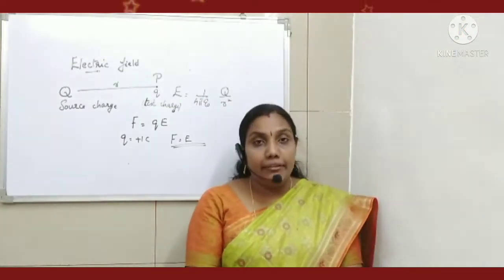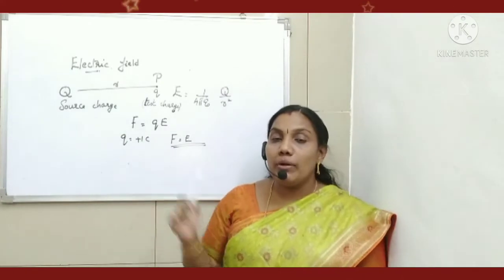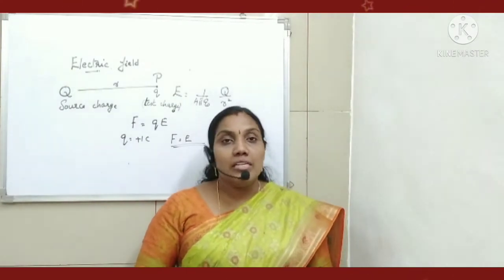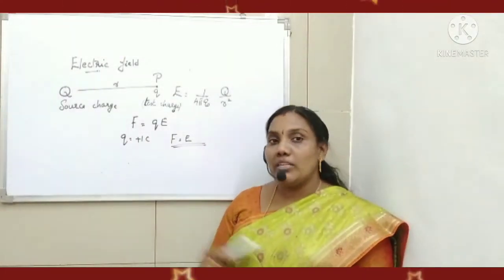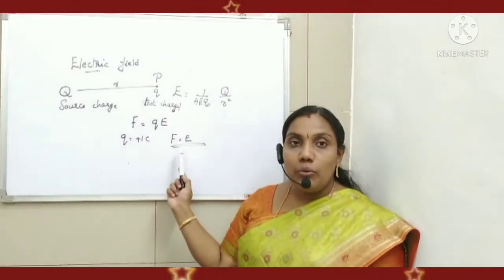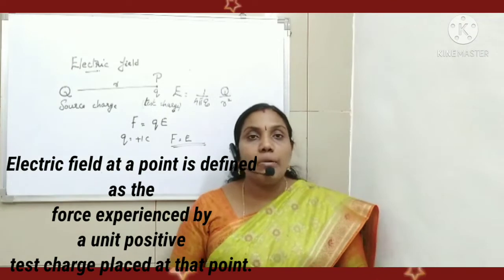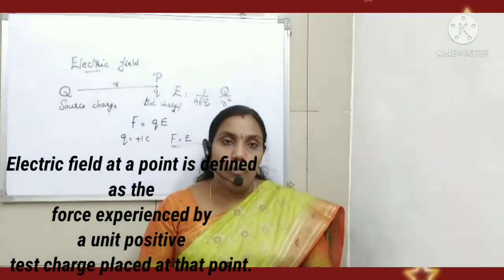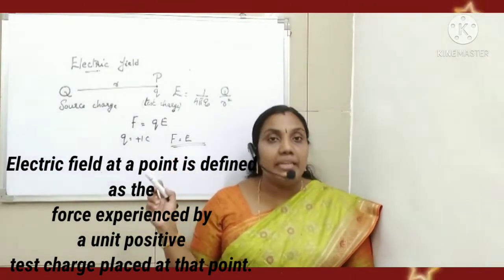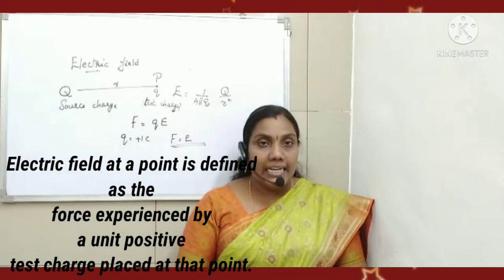Now we can quantitatively define what is electric field. We know the relation between force and electric field is F = qE, where q represents the test charge and E represents the electric field produced by the source charge. Let the test charge be +1 coulomb. If q = +1 coulomb, then F = E. So electric field is the force experienced by a unit positive test charge placed at that point. Electric field due to a source charge is defined as the electrostatic force experienced by a unit positive test charge when placed at the point. This is the quantitative definition of electric field.